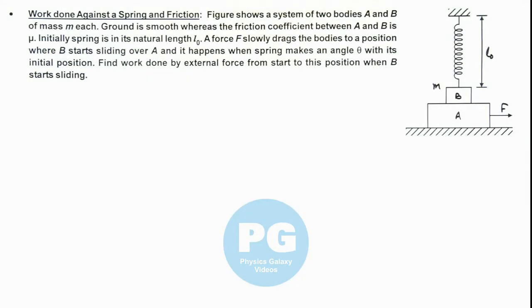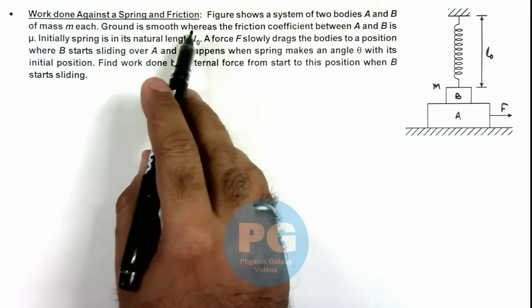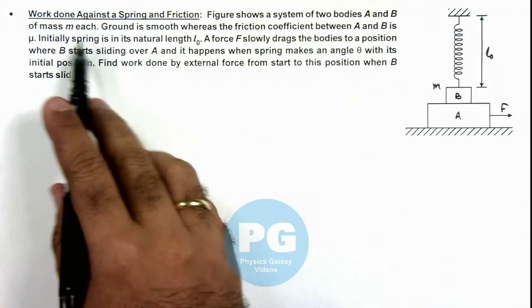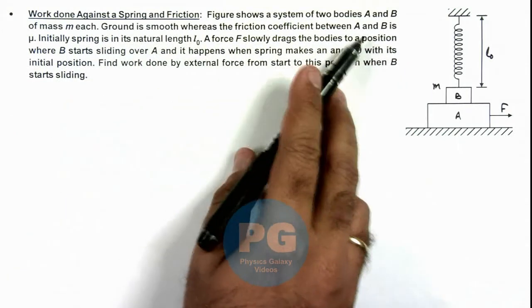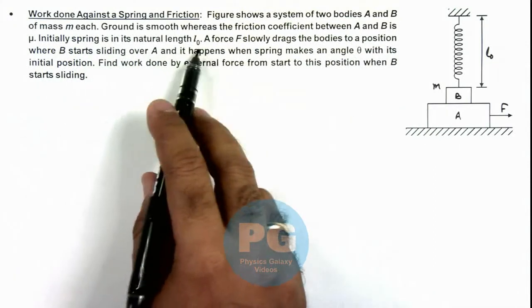In this illustration we'll study the work done against spring and friction. The figure shows a system of two bodies A and B of mass m each. Ground is smooth whereas the friction coefficient between A and B is μ. Initially the spring is in its natural length L₀.